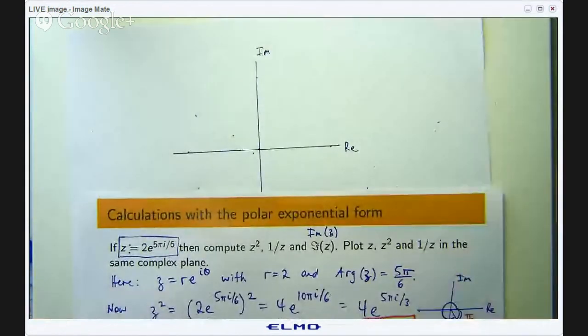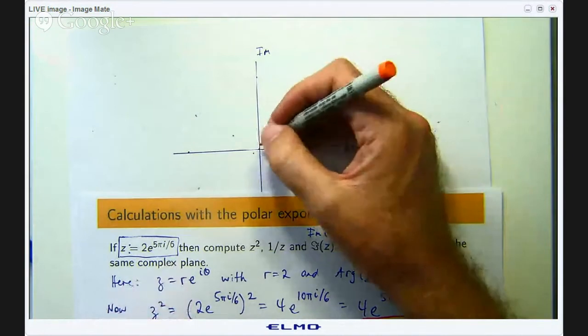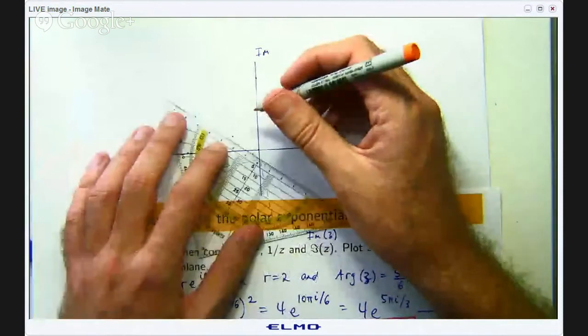Okay so if I was to plot z = 2e^(5πi/6) you would rotate 5π/6 in the anticlockwise direction and go out 2.